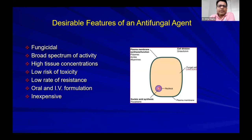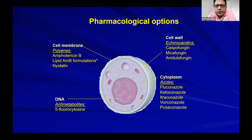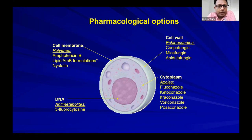An ideal antifungal agent should be fungicidal, broad spectrum covering Candida and Aspergillus, achieve high tissue concentrations, have low toxicity, low resistance rates, oral and IV formulations, and be inexpensive. Like antibacterials, antifungals include cell wall inhibitors (echinocandins), azoles acting on the cytoplasm, DNA inhibitors like 5-flucytosine, and drugs acting on the cell membrane such as amphotericin B.